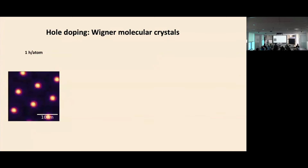With this method, we can look at the electron and hole distribution in the system. We will first look at the hole-doped case, where we apply a negative gate voltage on the bilayer WS2 and start to dope holes in the system.